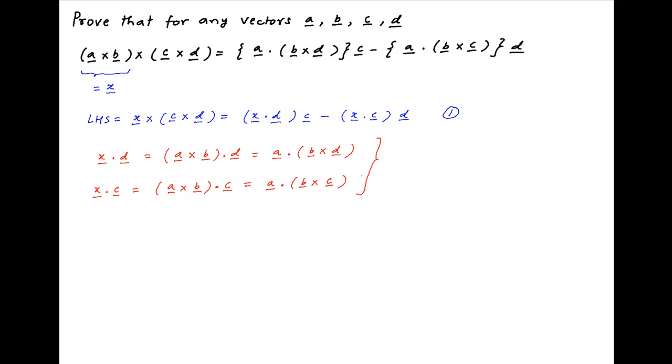Substituting the values of x dot d and x dot c in result 1 obtained above, the left hand side of the given equation becomes a dot b cross d times the vector c minus a dot b cross c times the vector d, which is equal to the right hand side of the expression given in the problem statement, which completes the proof.